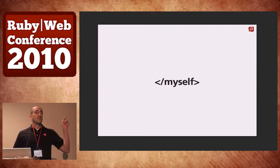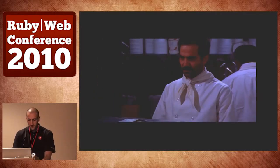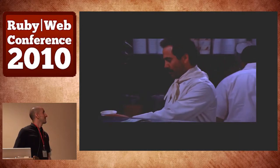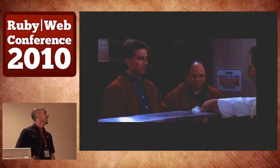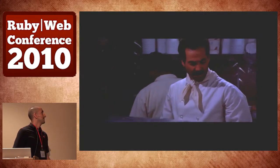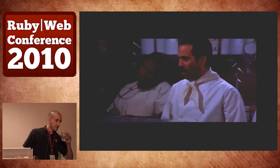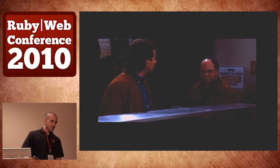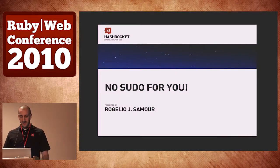So now, feast your eyes on this. [Soup Nazi clip plays: Medium turkey chili. Medium crab bisque. I didn't get any bread — just forget it, let it go. Excuse me, I think you forgot my bread. Bread, two dollars extra. Two dollars? But everyone in front of me got free bread. You want bread? Yes please. Three dollars! No soup for you.] You may be wondering what that clip had anything to do with my talk. Absolutely nothing. It's a show about nothing anyway, right?